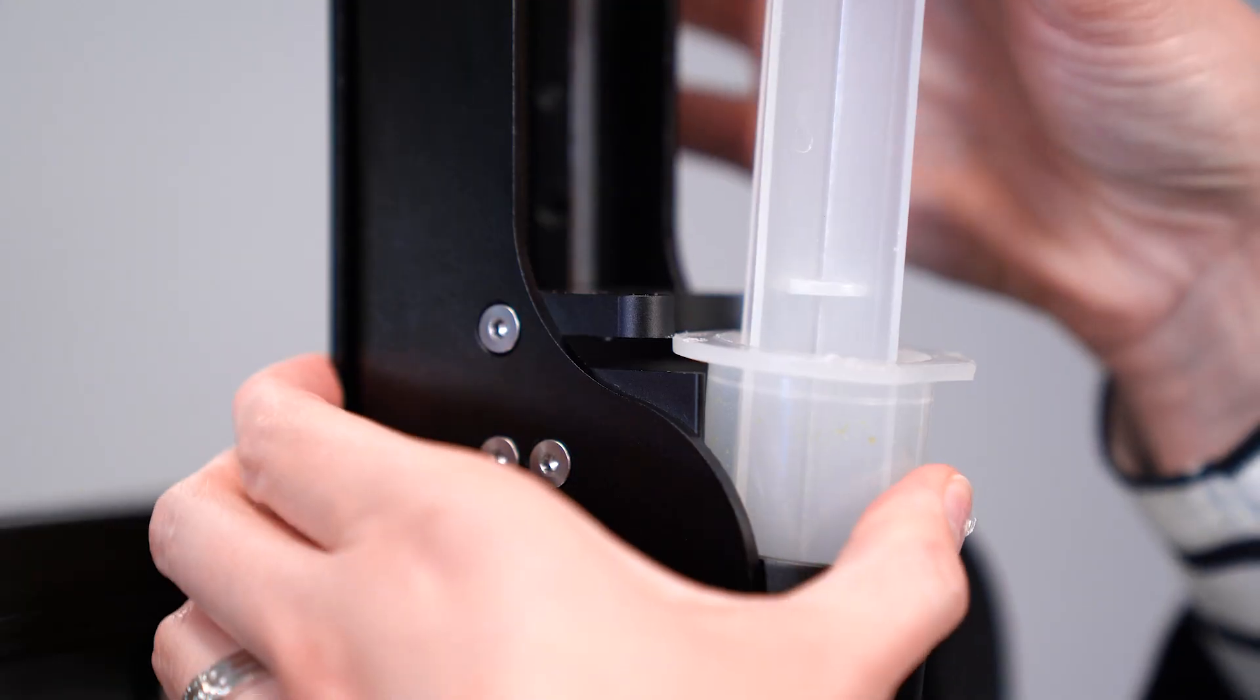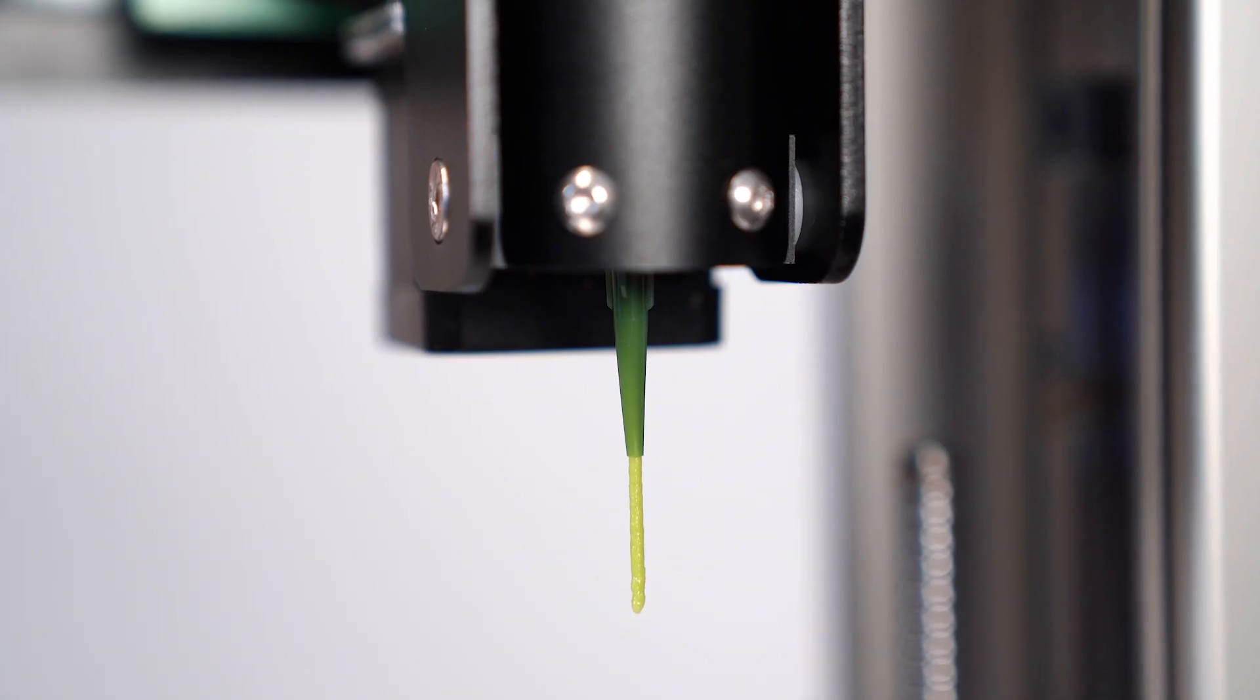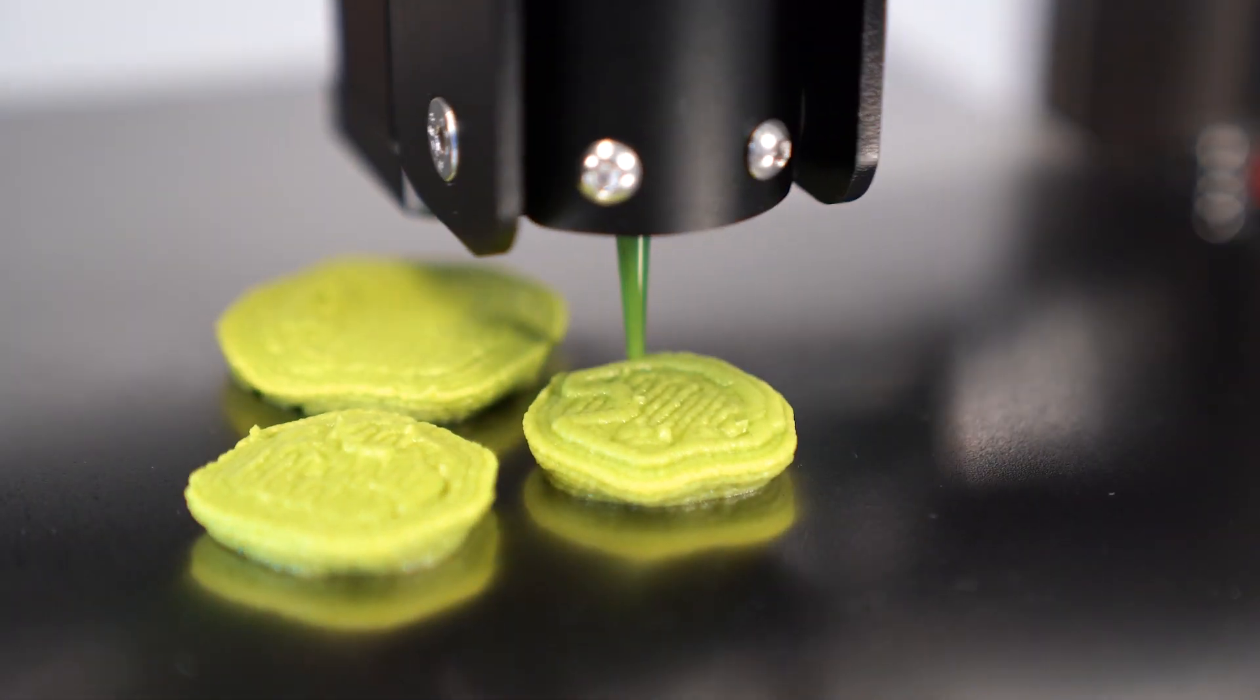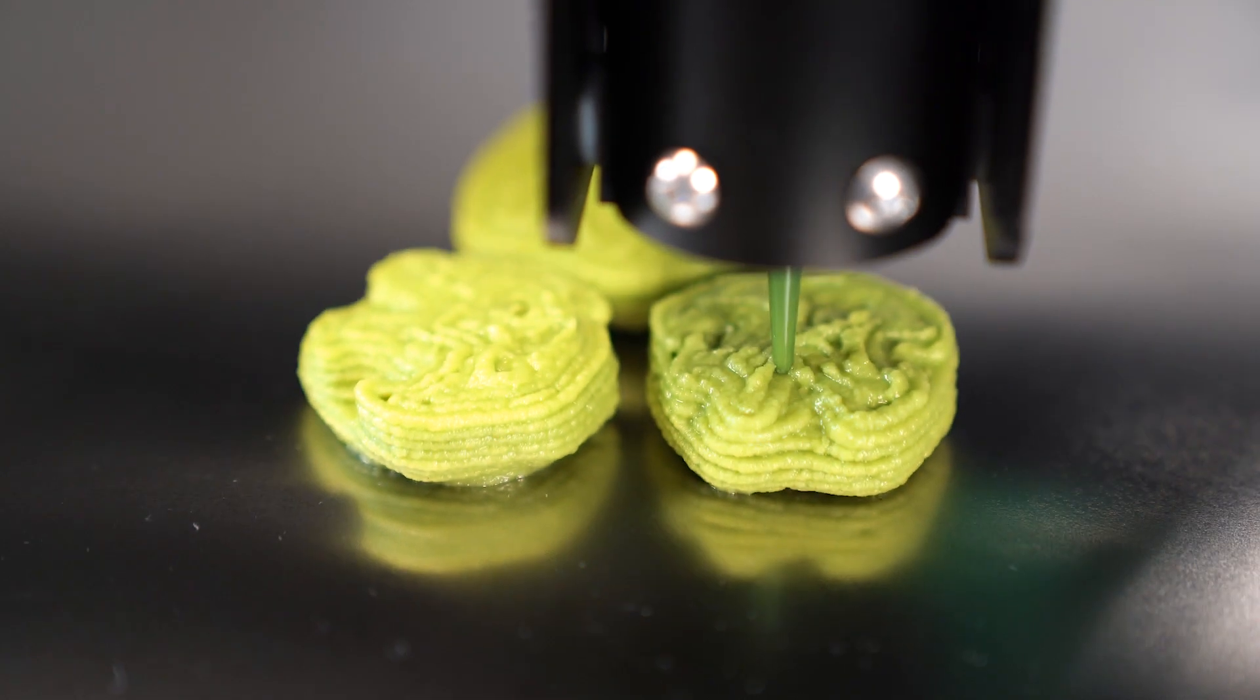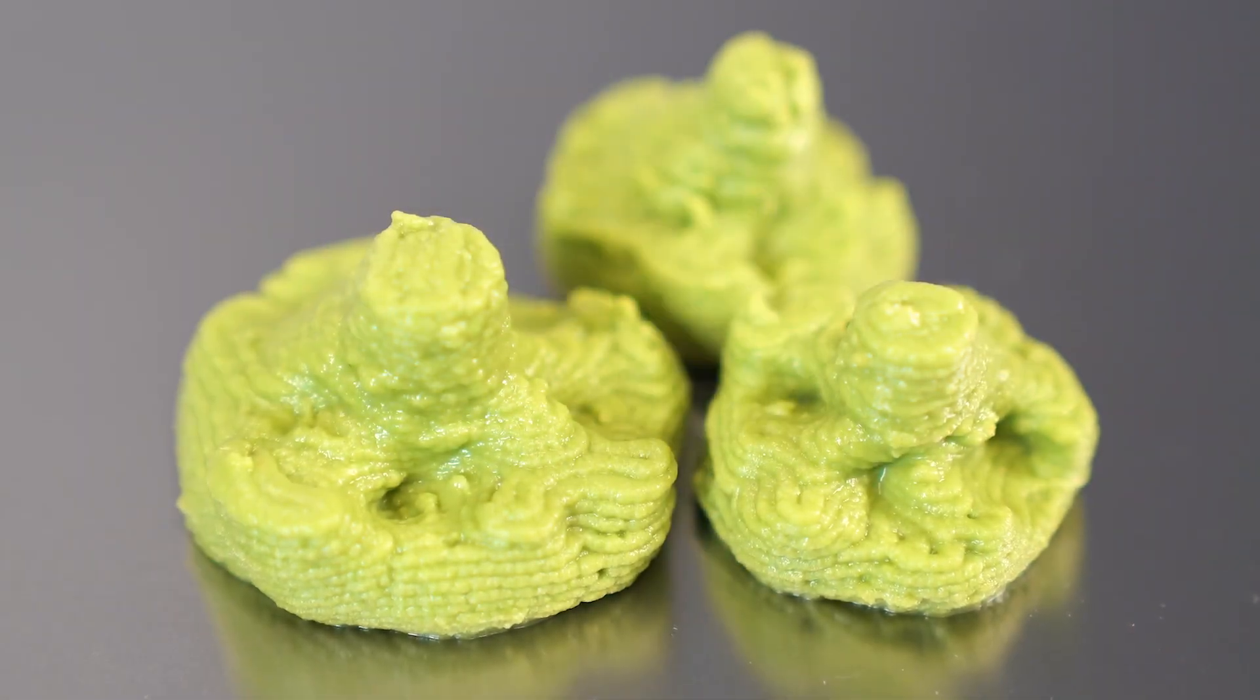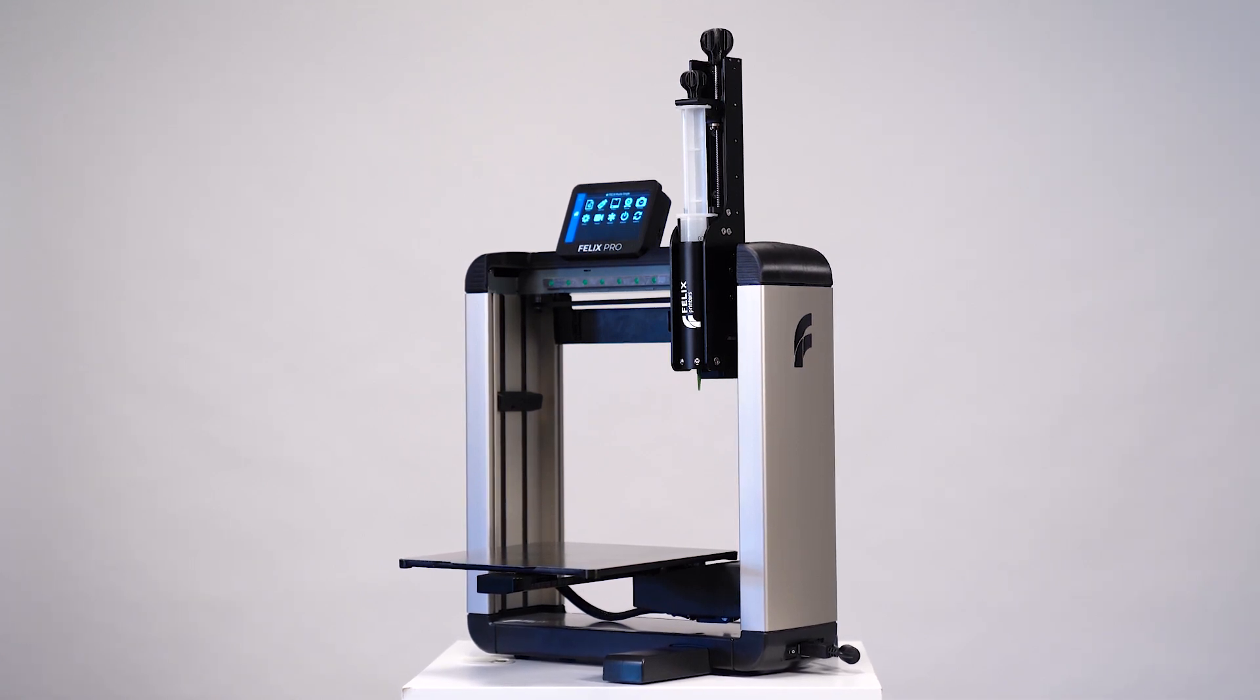Prime the syringe to eliminate air bubbles for a smooth print result. Bring your creation to life. Print pastes such as pureed vegetables, fats, sugar, icing, and more. Take your plate to the next level.